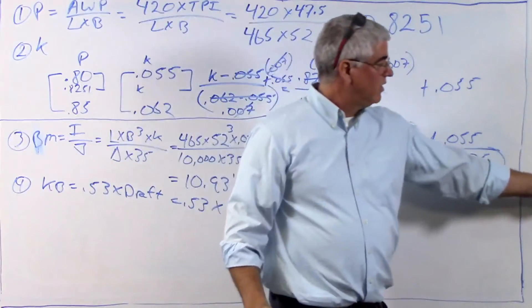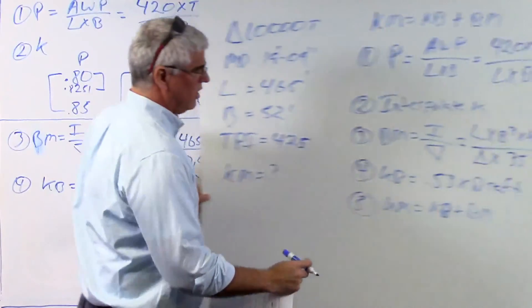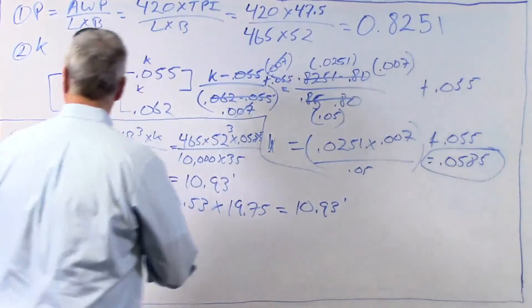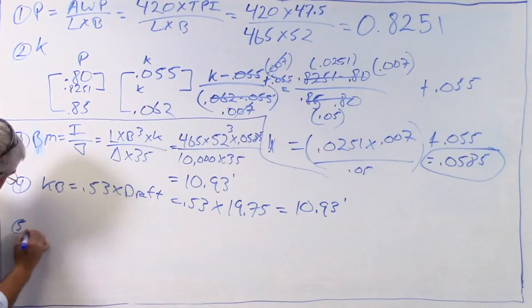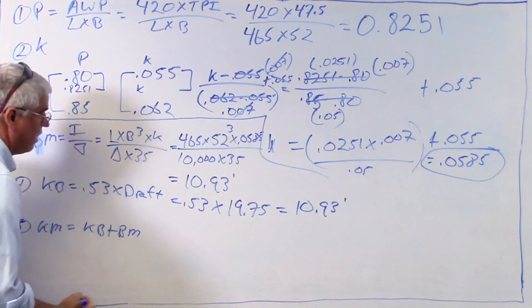Now we're ready to do step five. And step five is the final step, the calculation of km, this formula here, kb plus bm. So step five, km equals kb plus bm.